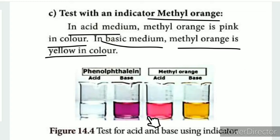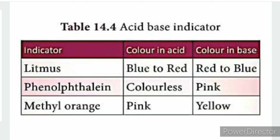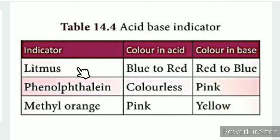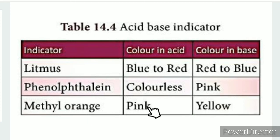Using a table to summarize: color in acid and color in base. Litmus paper — blue or red. Red turns blue in base. Phenolphthalein drops — colorless in acid, pink in base. Methyl orange — pink in acid, yellow in base.